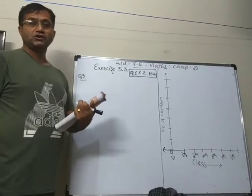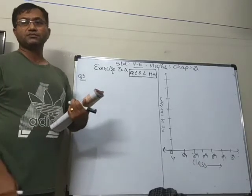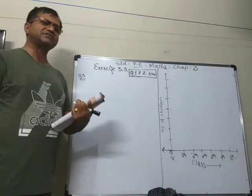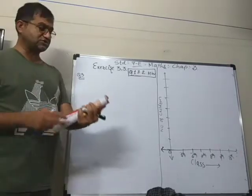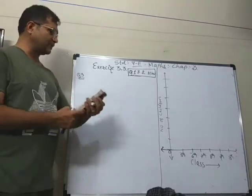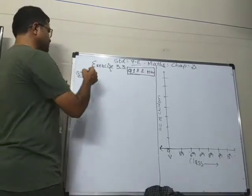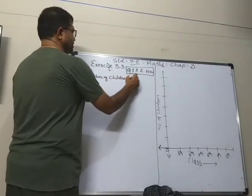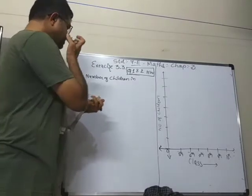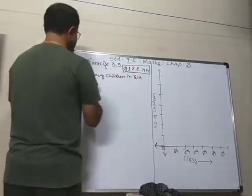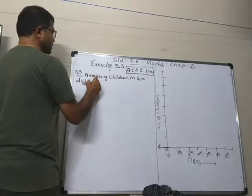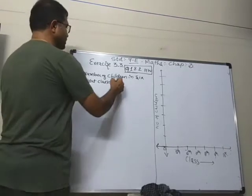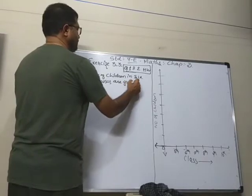Questions one and two are very simple — you just have to watch the graph drawn in the book and give the answers from the graph. So I am leaving questions one and two for your homework. Let's start with question number three: the number of children in six different classes are given below.